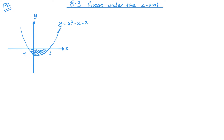Now, if I've got a diagram like this and I want to find this shaded area, let's have a look at what happens. Same as before, I'm going to integrate between 2 and negative 1. And here it is, the x. So let's integrate it.